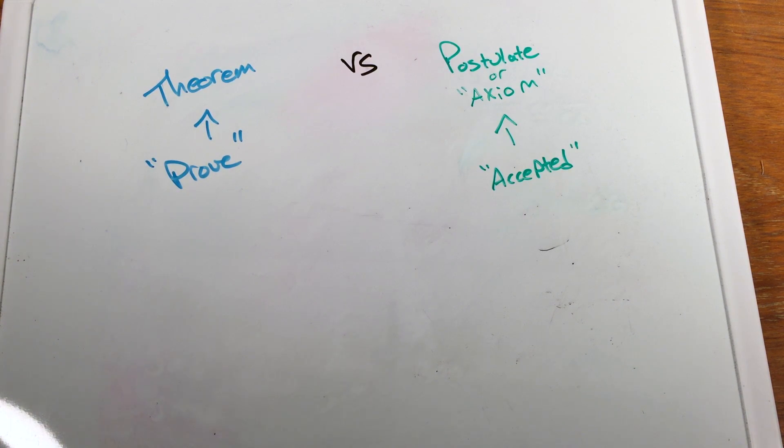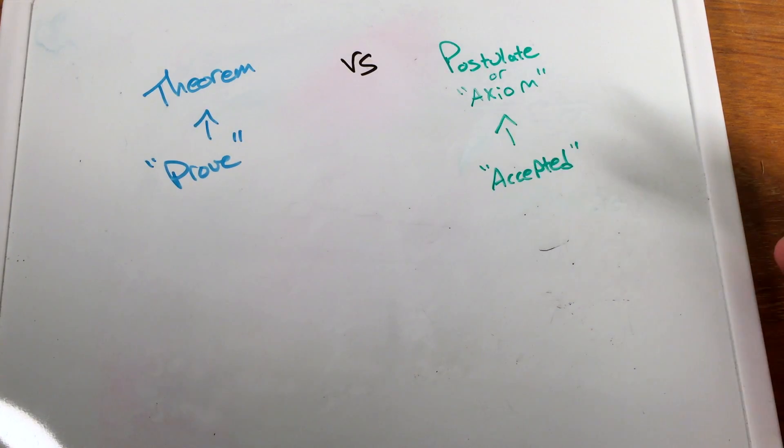So anyway, a lot of these are used in what we call an if-then form. We're stating the if-then form. So, like, if something happens, then something else will happen. And we call those a conditional statement.